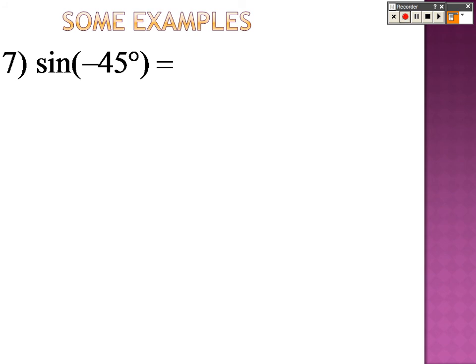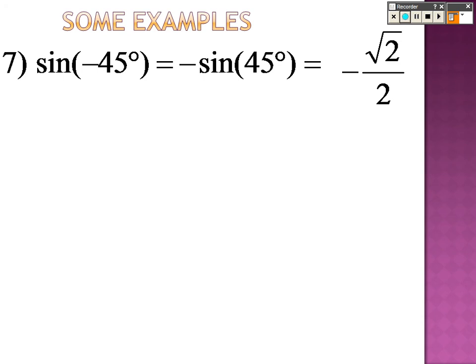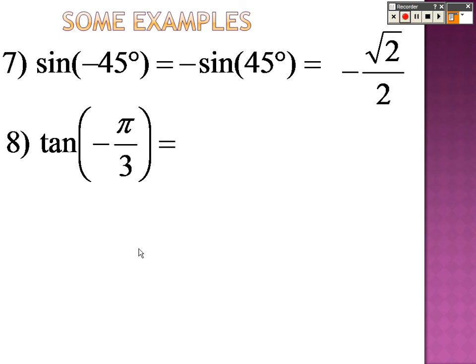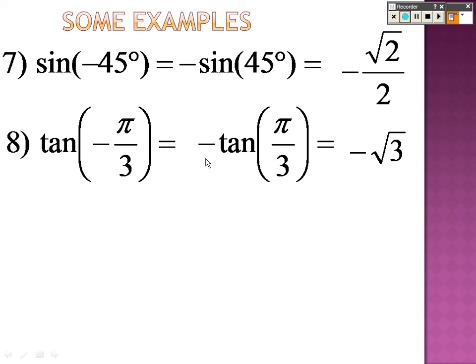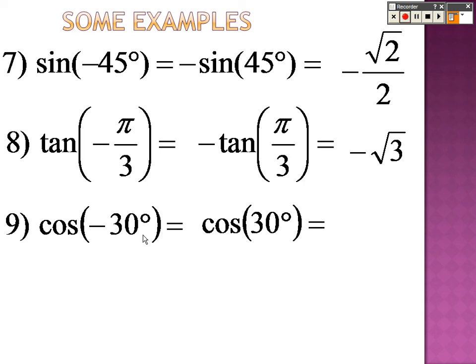Sine of negative 45 degrees is like saying negative sine of 45 degrees. 45 degrees is the middle finger, so square root of the left over 2 is root 2 over 2, giving negative root 2 over 2. Tangent of negative pi over 3: pull the negative out to get negative tangent of pi over 3. Pi over 3 is the pointer finger; tangent is root 3 over root 1, which is root 3. With the negative outside, the answer is negative root 3. Cosine of negative 30 degrees is the same as cosine of 30 degrees — the ring finger. Cosine is root 3 over 2, no negative out front.